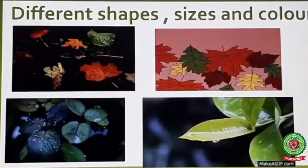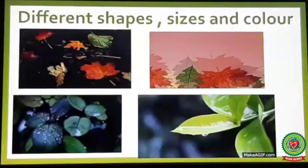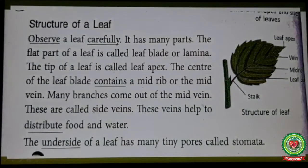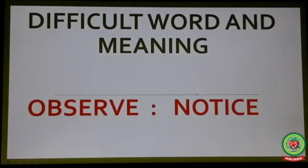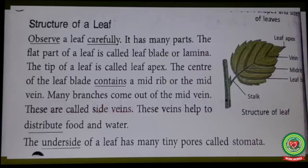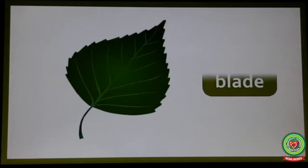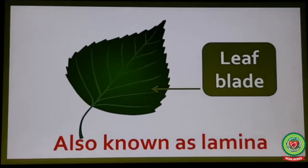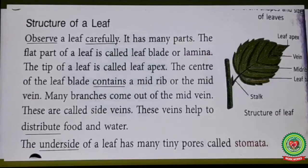Now, the next paragraph: structure of a leaf. Observe a leaf carefully. Underline the word 'observe' and write its meaning: notice. Underline the word 'carefully' and write its meaning: attentively. A leaf has many parts. The flat part of a leaf is called the leaf blade or lamina. Look at this picture — this flat part of a leaf is called the leaf blade, also known as lamina.